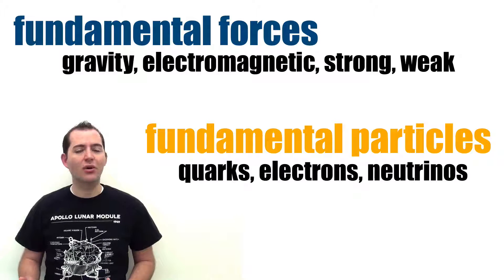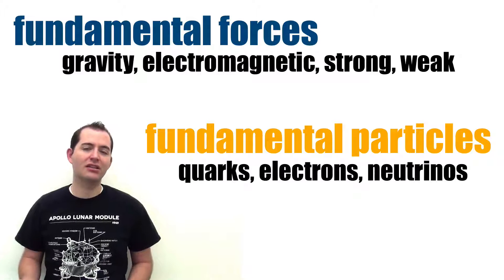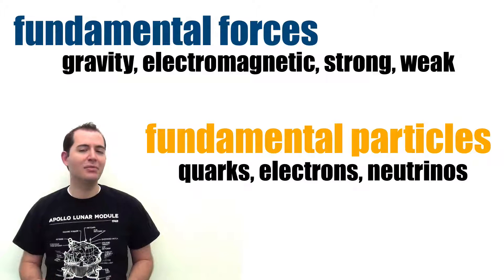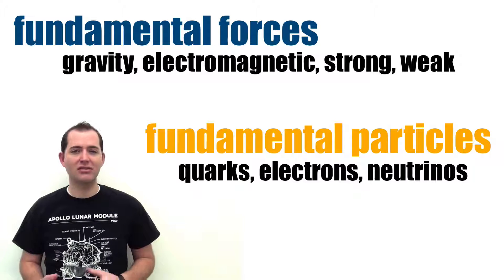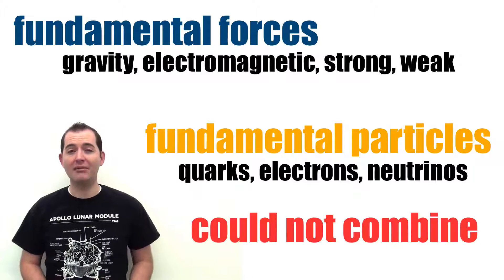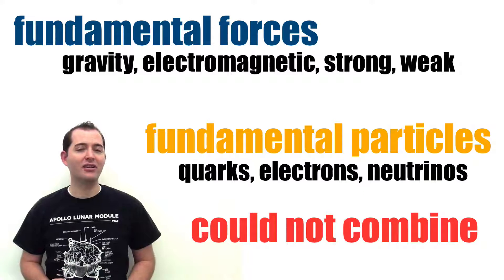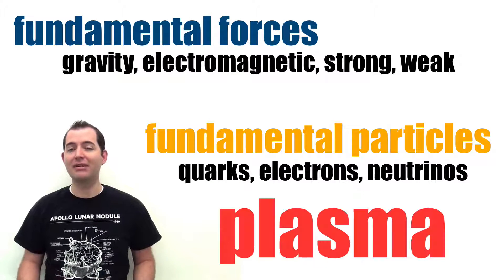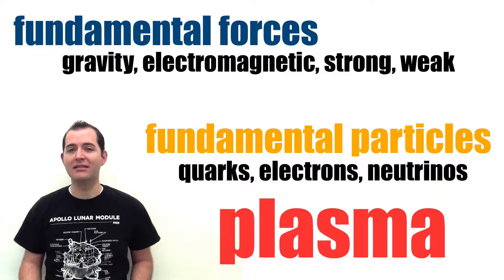These particles included quarks, electrons, and neutrinos. At this point, these particles could not combine because of the extreme heat in the early universe, and the entire universe was a plasma.